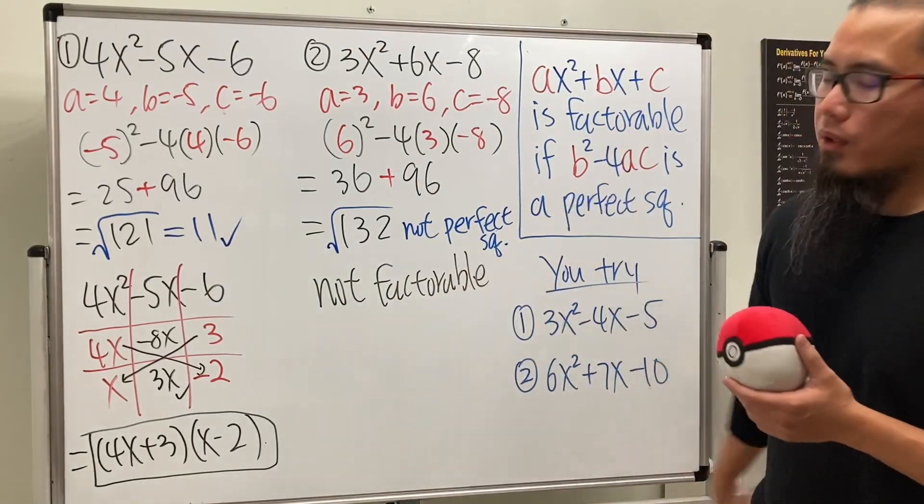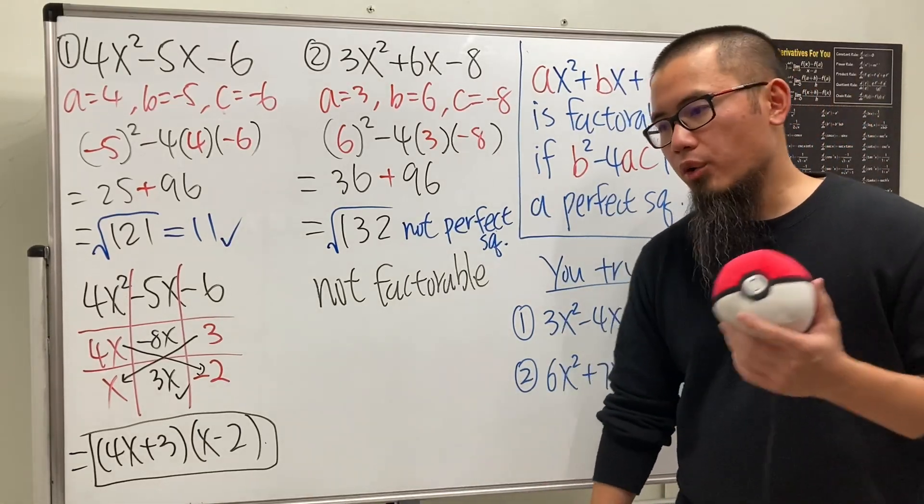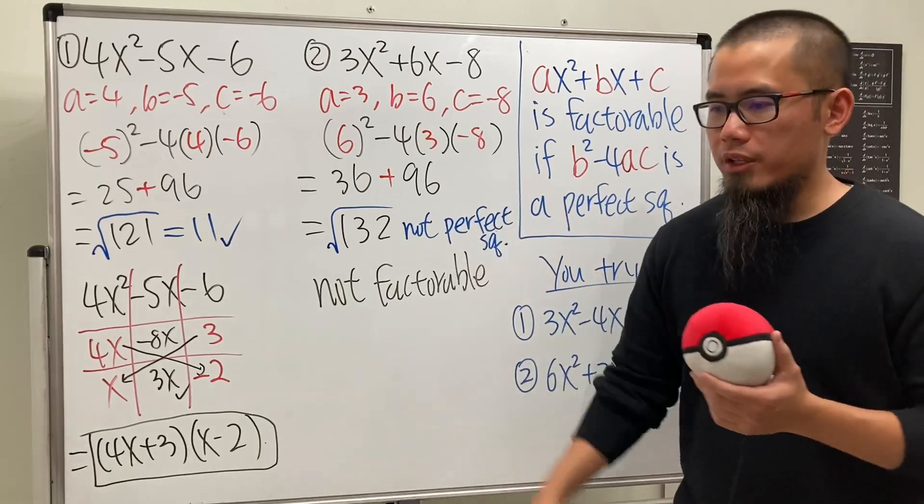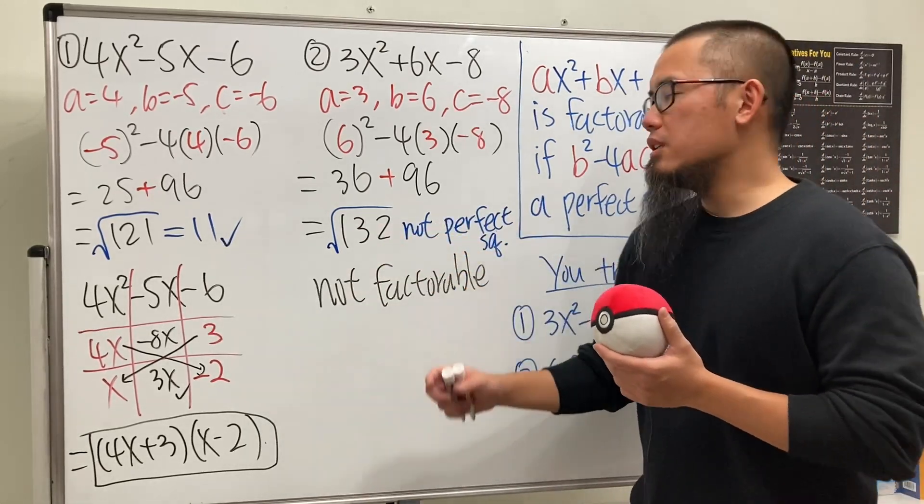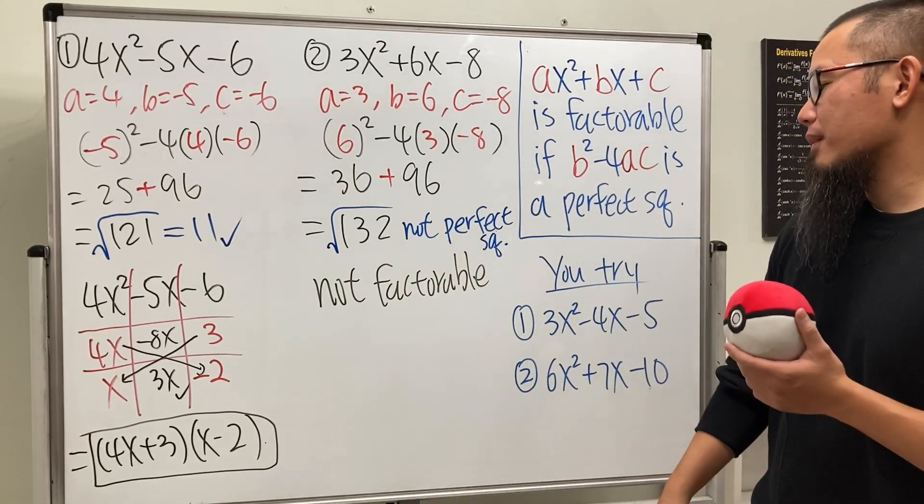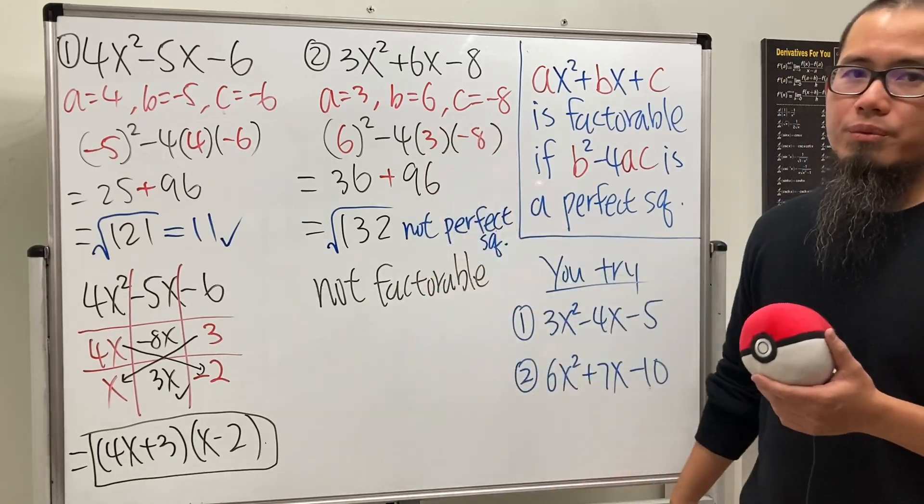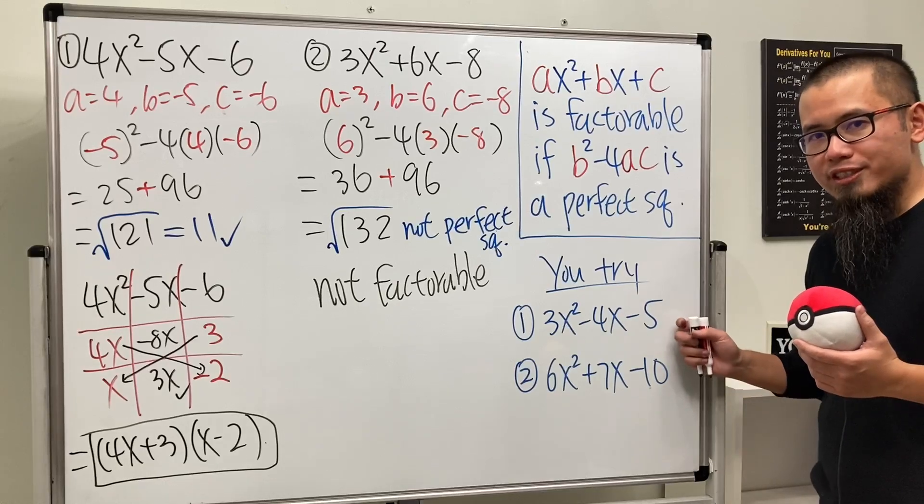So there you have it. If you guys are tired of like guessing, checking, and then just trying all the combinations for factoring trinomials, well go ahead and do this first. If you end up with not a perfect square for the discriminant—yeah, that's the name of that thing—you don't even have to continue. So hopefully this helps, and don't forget to try these two questions, right?